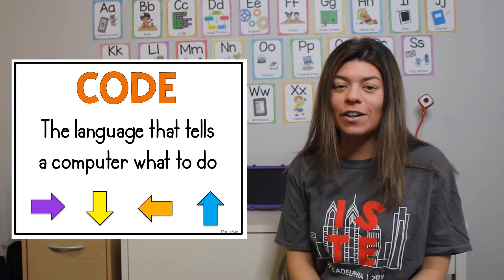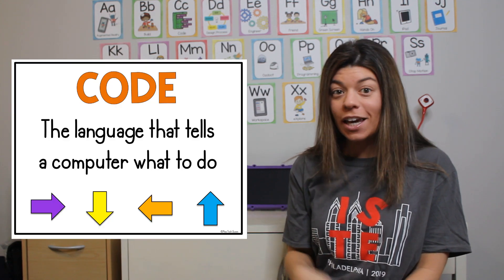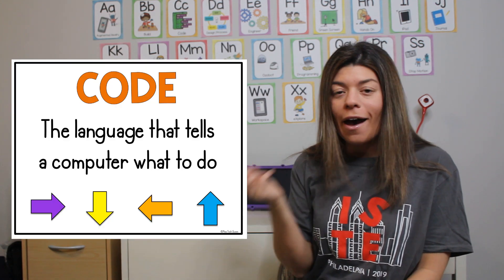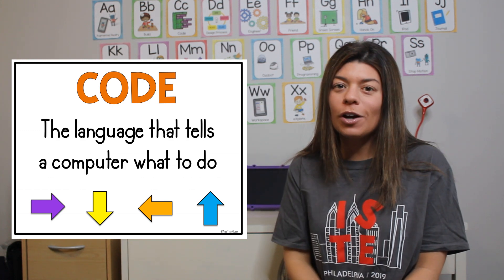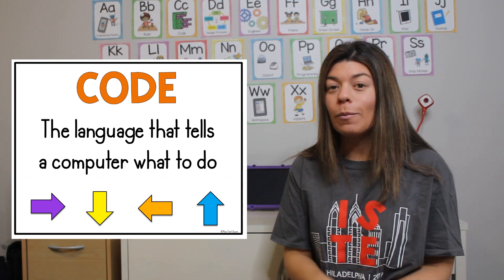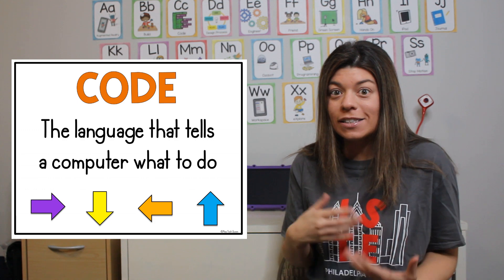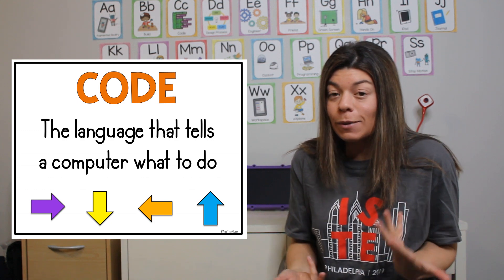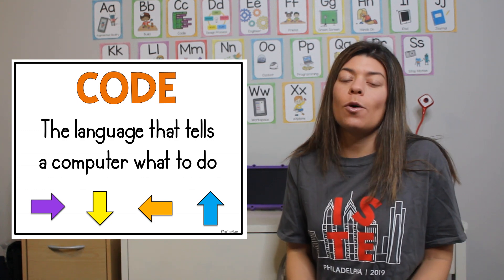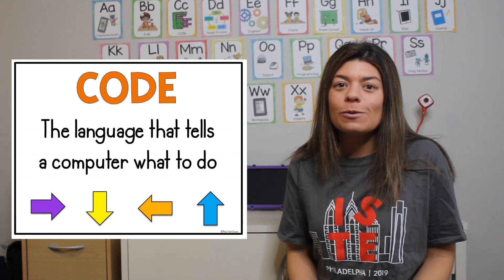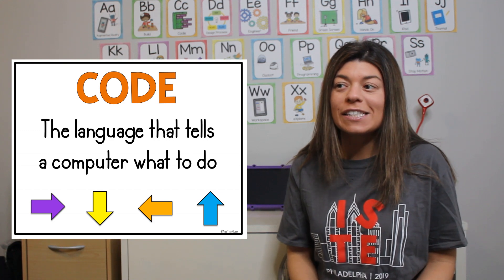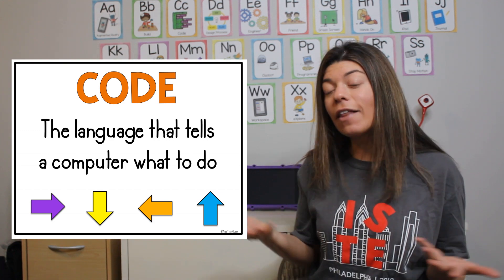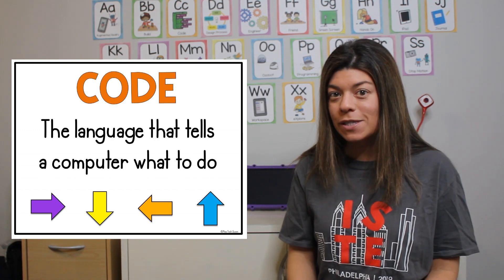Code is the language that the computer speaks. Just like you have your brain that helps you do things, a computer has a brain inside it and it needs to be told what to do. So when we use code — the language that the computer speaks — we can tell it what to do in certain steps.